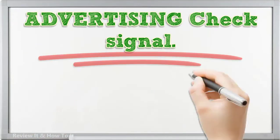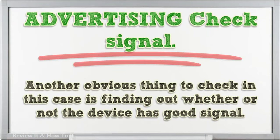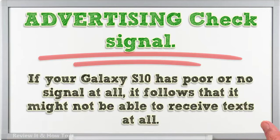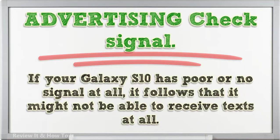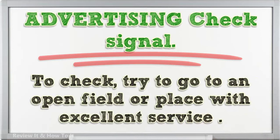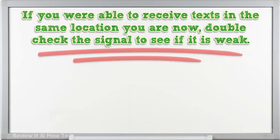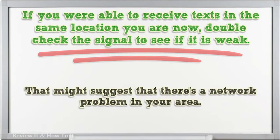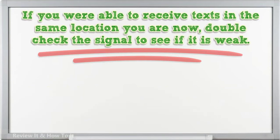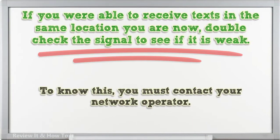Check signal. Another obvious thing to check is finding out whether or not the device has good signal. If your Galaxy S10 has poor or no signal at all, it follows that it might not be able to receive texts. Try to go to an open field or place with excellent service. If you were able to receive texts in the same location, double-check the signal to see if it is weak — that might suggest there's a network problem in your area. To know this, contact your network operator.